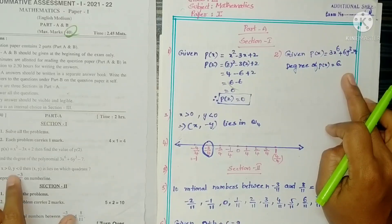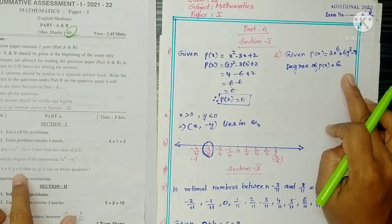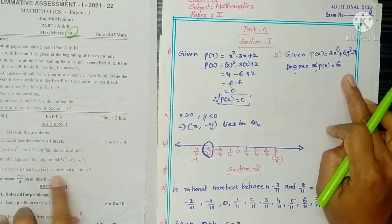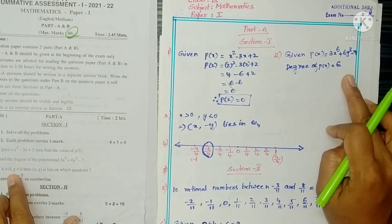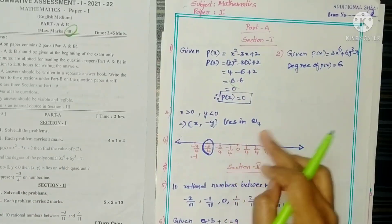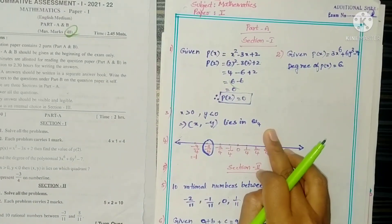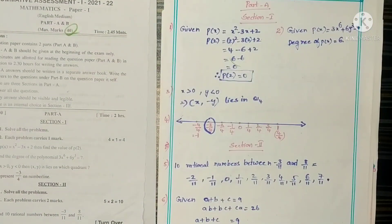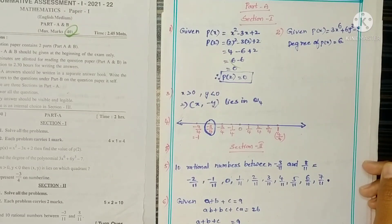Question 3: If x is greater than 0 and y is less than 0, then the point (x, y) lies in which quadrant? Greater than 0 means plus, less than 0 means minus — so plus-minus is Q4 (fourth quadrant).